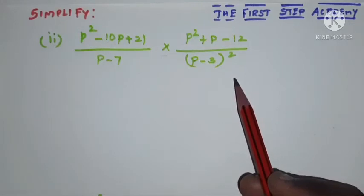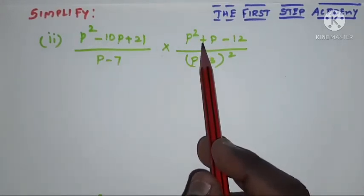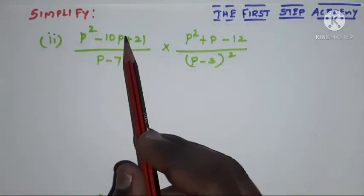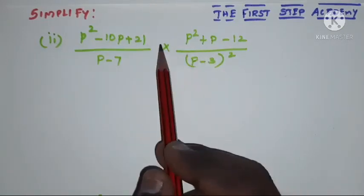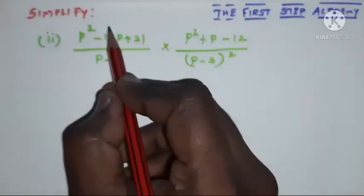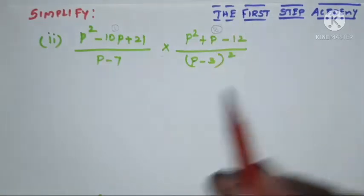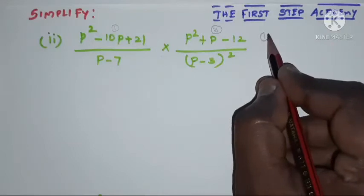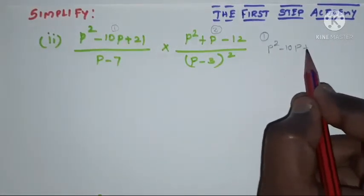We cannot directly cancel because there are two polynomials in the numerators. So first, what we have to do is factorize these two polynomials — we will get the factors through which we may cancel directly. I am choosing this as polynomial one and this as polynomial two. The first polynomial is p squared minus 10p plus 21.